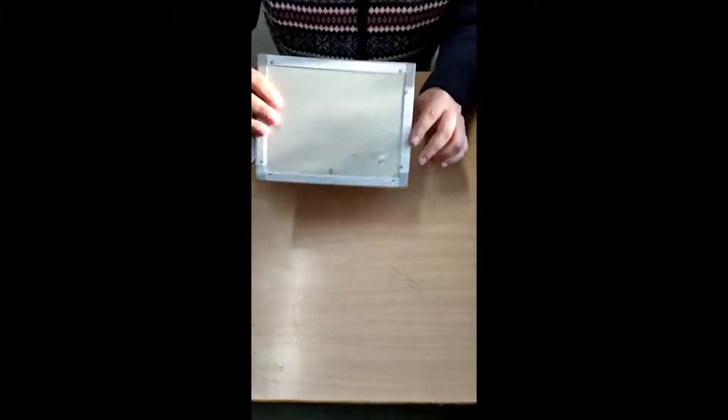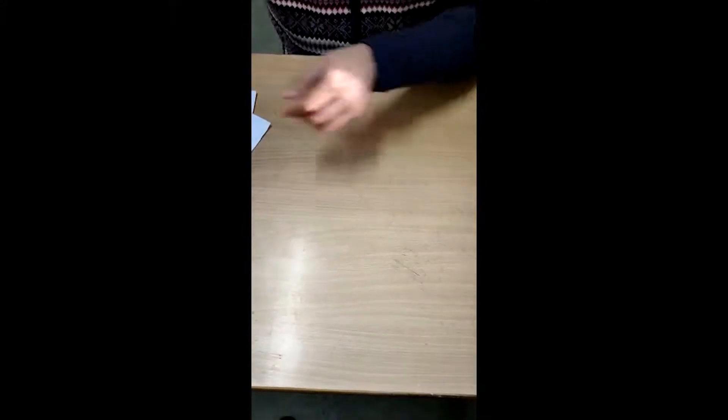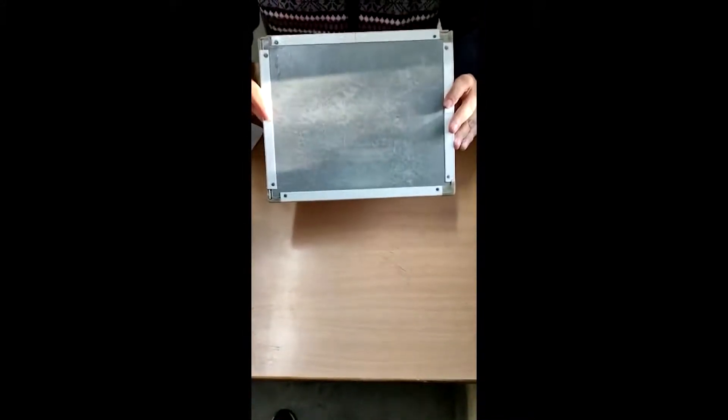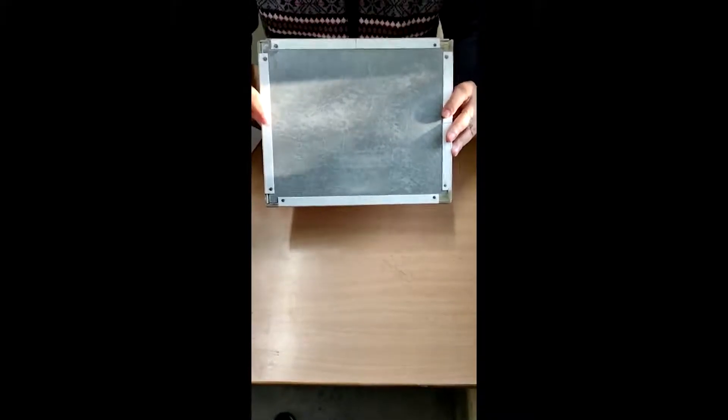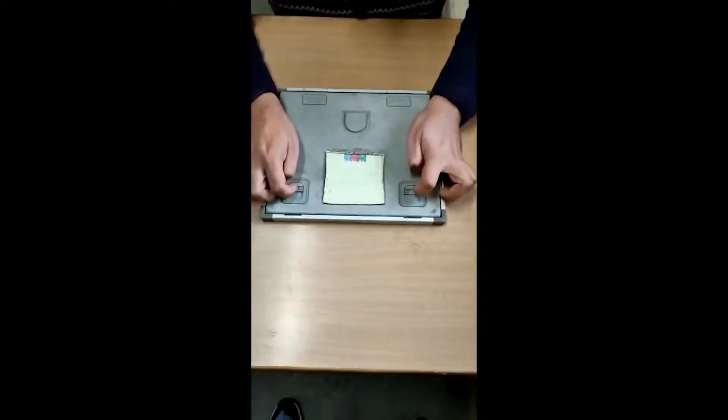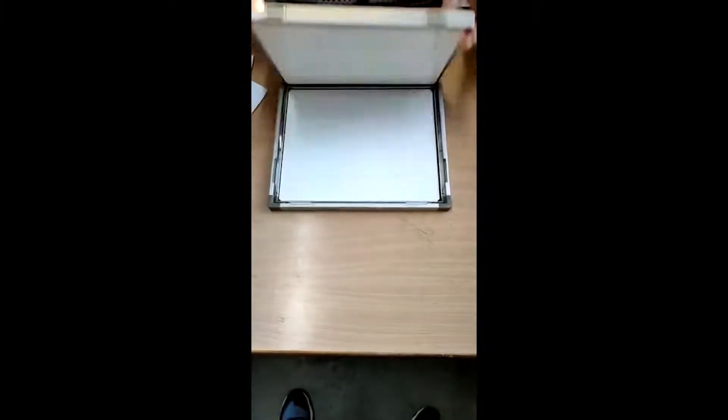Now different cassettes are available. Like we have another cassette which is a bigger one, which is being used to take skull views. The size of this cassette is 8 by 10, 8 inches by 10 inches. Similarly, when you open this, you can clearly see you have two intensifying screens.